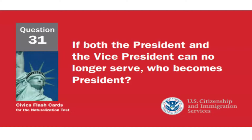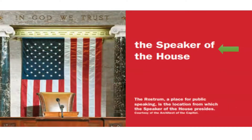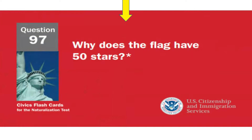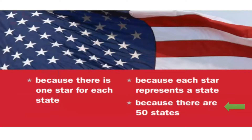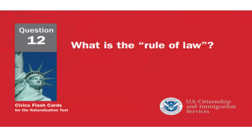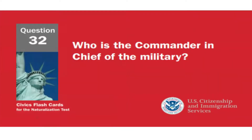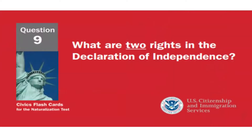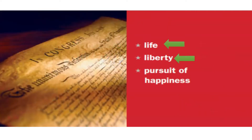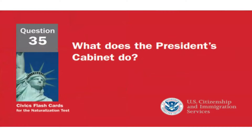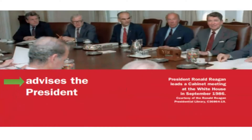Who was president during World War One? Woodrow Wilson. If both the president and the vice president can no longer serve, who becomes president? The Speaker of the House. Why does the flag have 50 stars? Because there are 50 states. What is the rule of law? Everyone must follow the law. Who is the commander-in-chief of the military? The president.